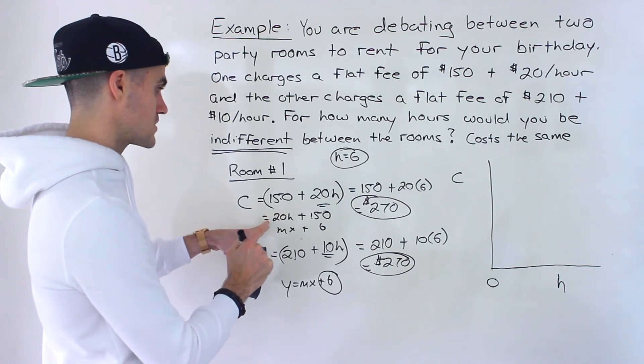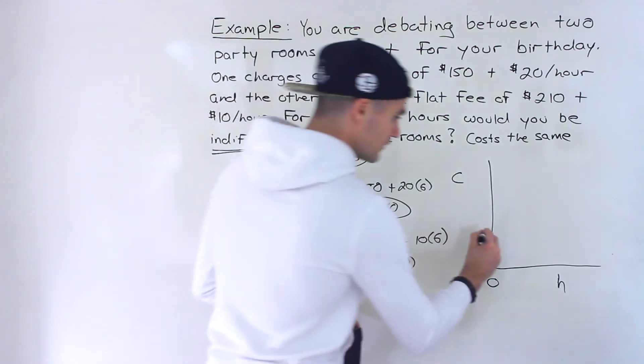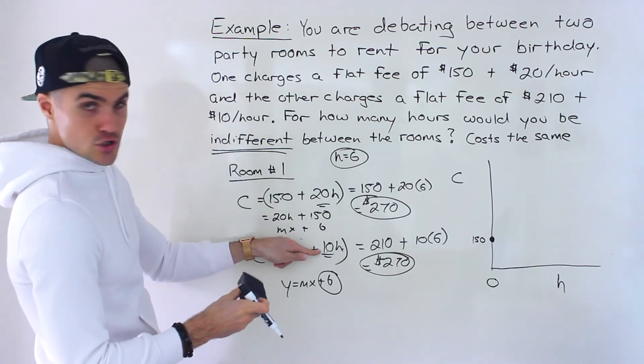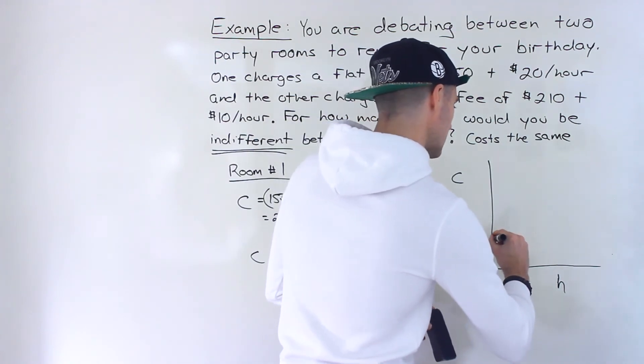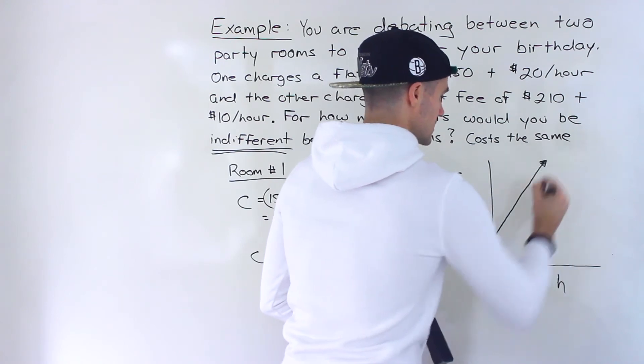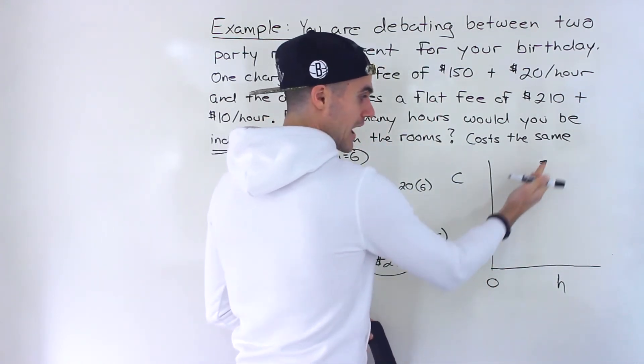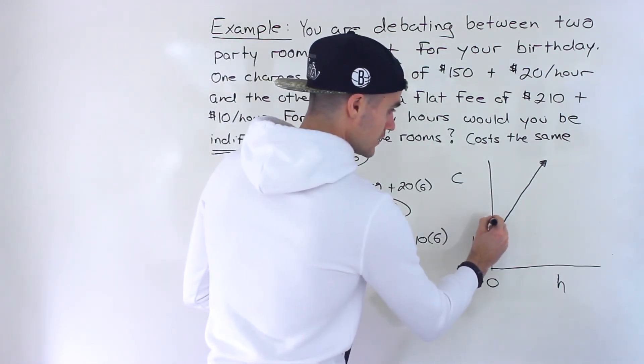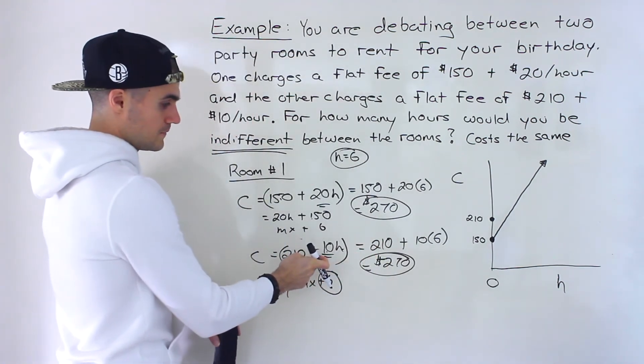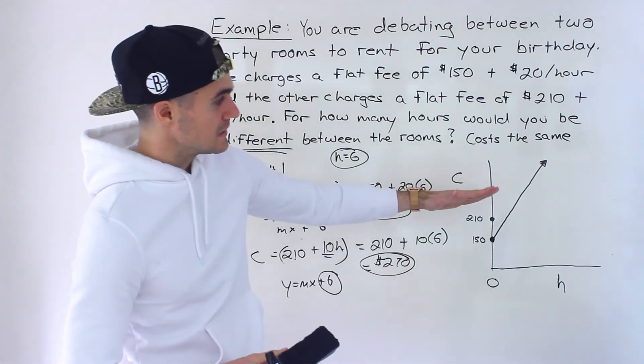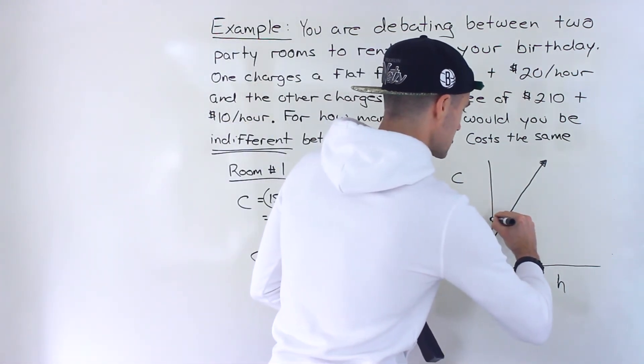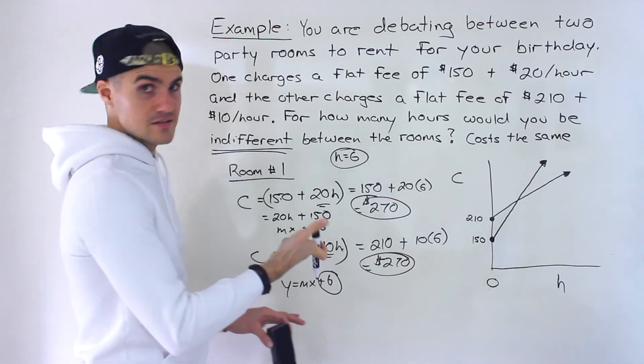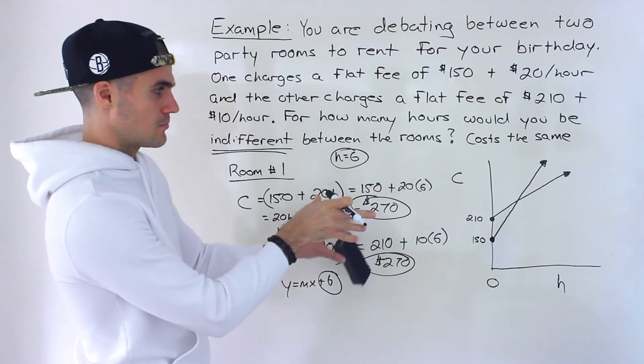So if you were to graph these, let's start with this one. What you would have is 150. So let's say 150 is like over here. That's where it's going to start. But then you have 20 as a slope. So it's a larger slope than 10. So it's going to be a more steep slope. So a lower flat fee, lower fixed fee, but then each hourly fee is higher. So it's going to be more of a steep line. Then the other one has a higher initial fee of 210, but it has a lower hourly fee of 10. So the slope is going to be less steep. So that slope is going to maybe look something like this. Again, this is not to scale. You could graph this on graphing paper, or you could graph both lines on Desmos if you want a more accurate graph. But this is approximately what's going to happen.